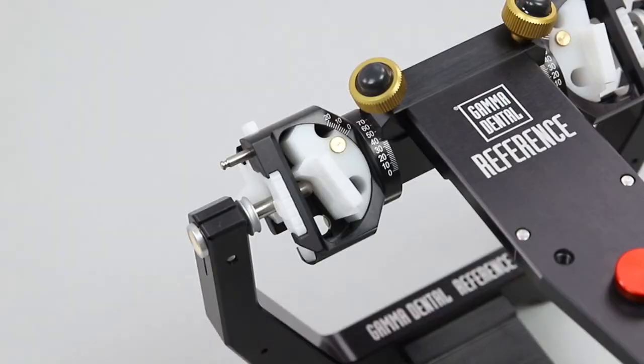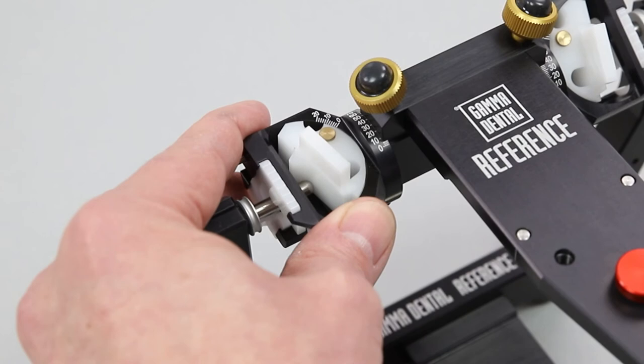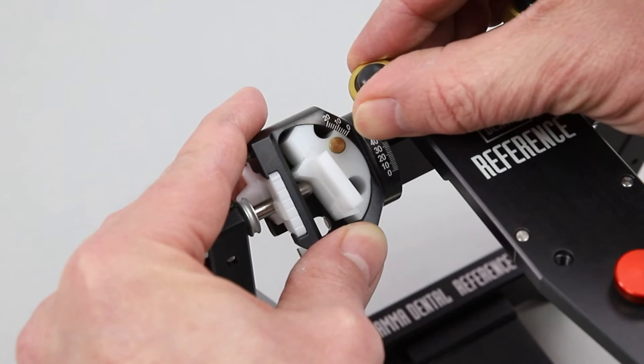The sagittal or protrusive inclination can be adjusted from 0 to 70 degrees by rotating the entire guide element. The fixation screw must be opened and closed properly again.